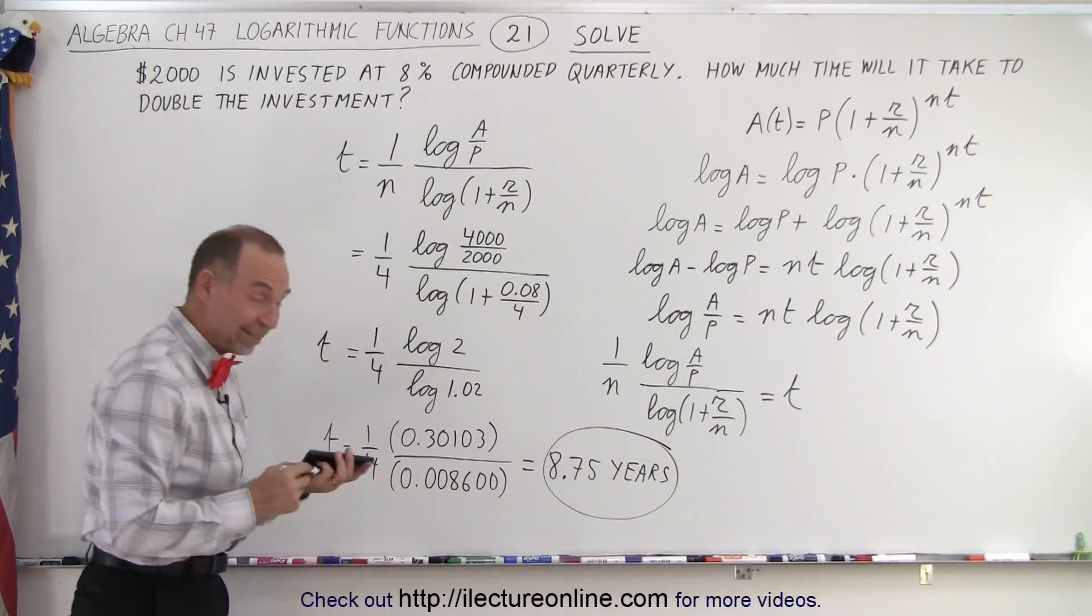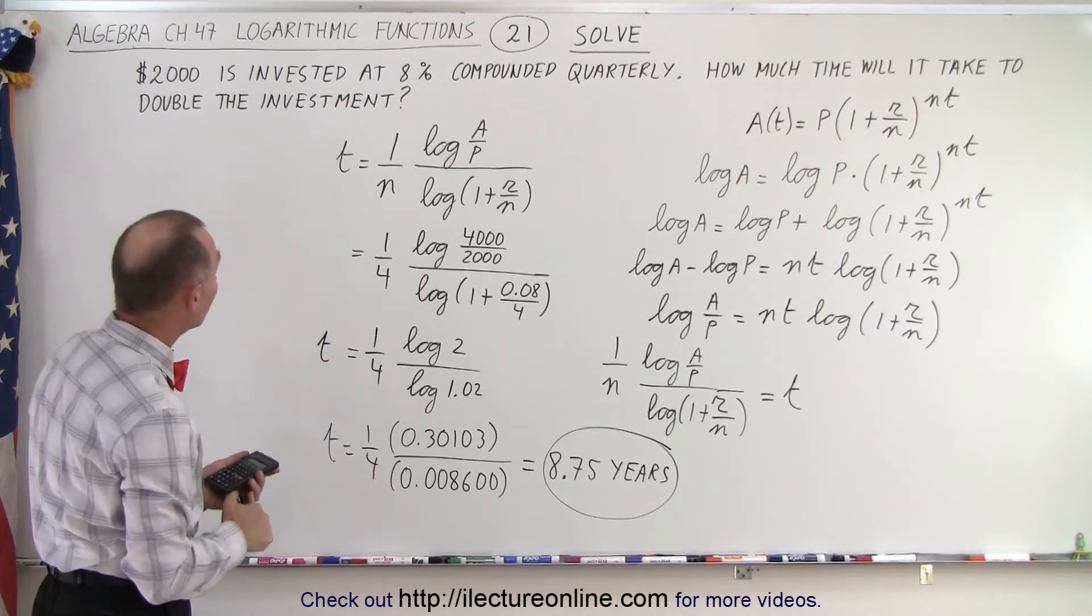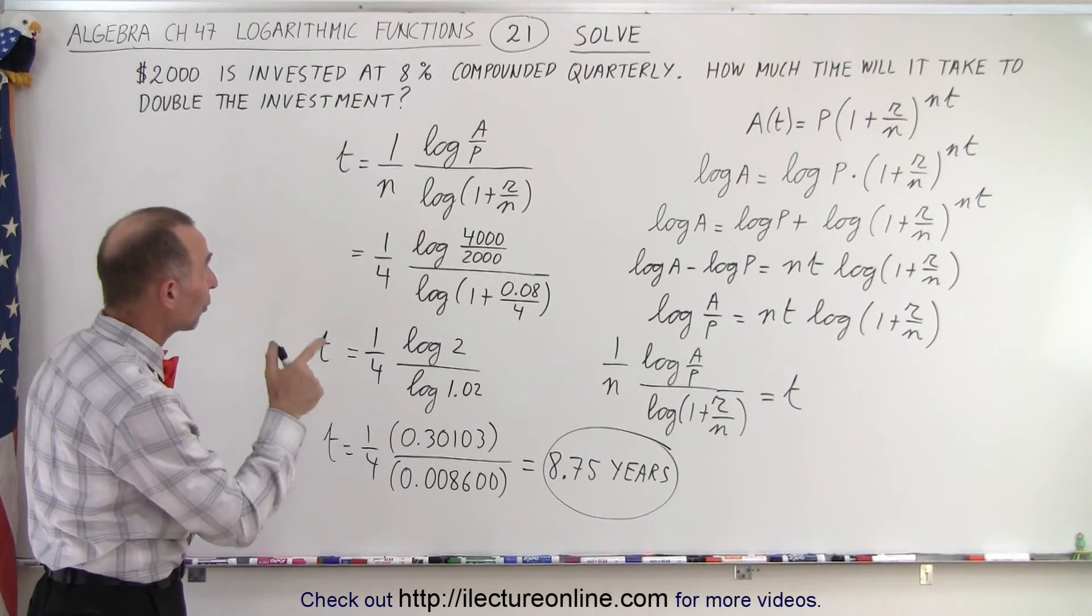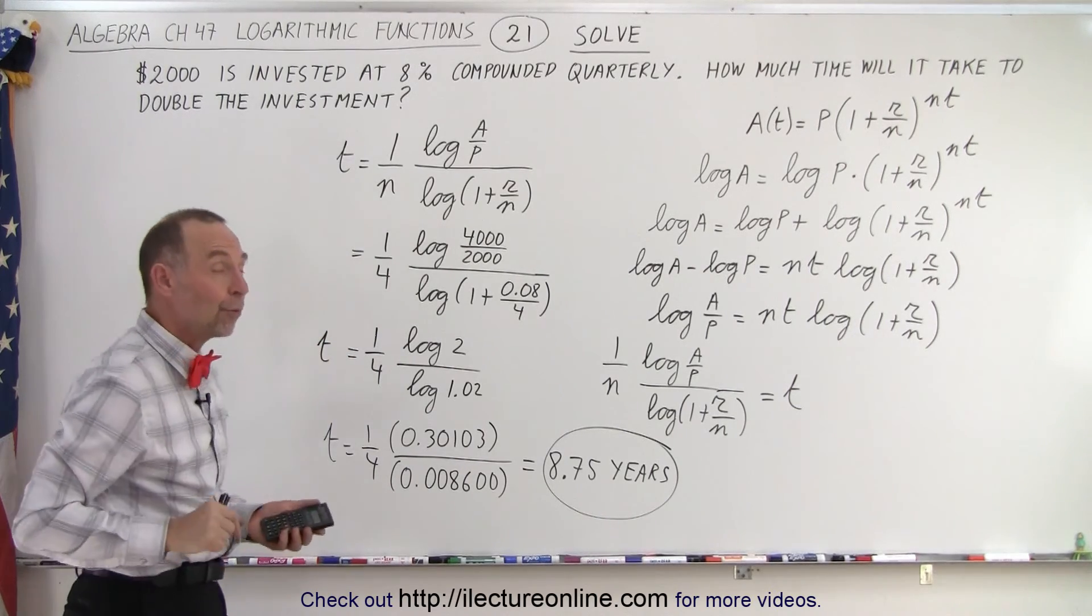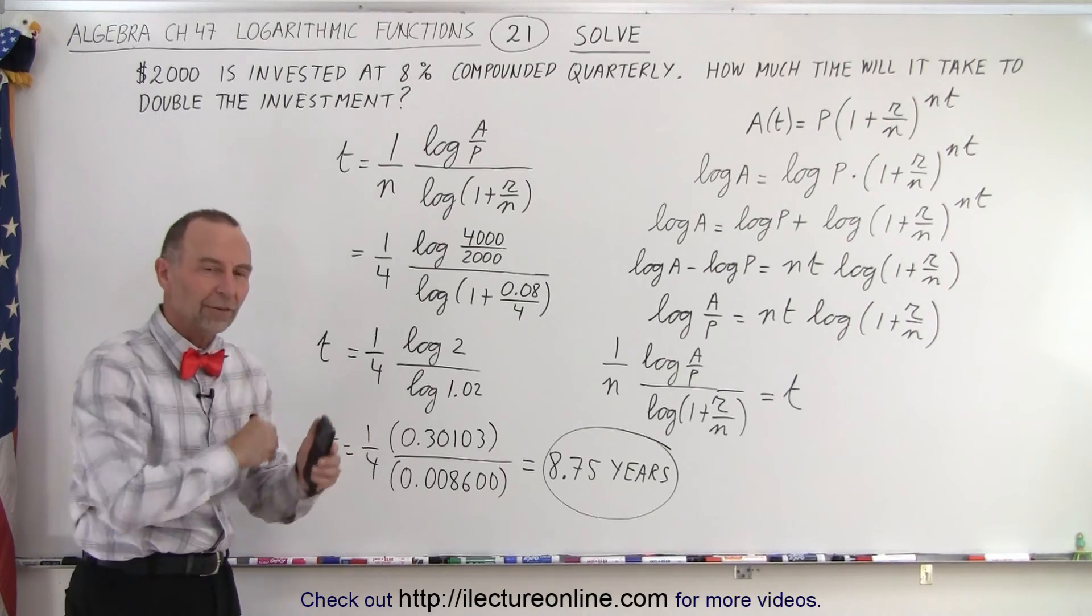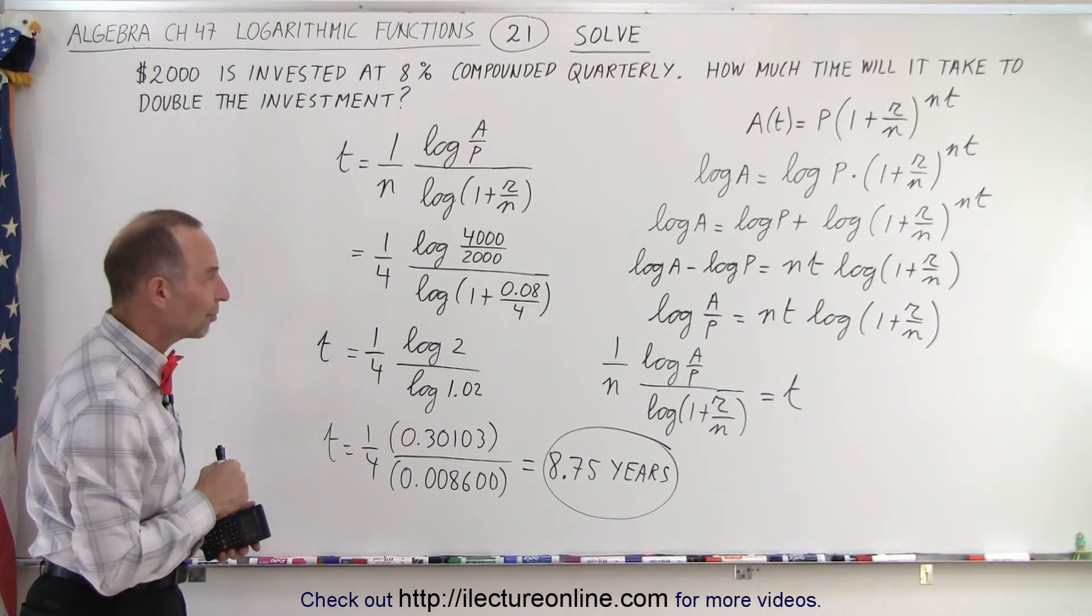So that means that if you take $2,000 and invest it at 8% compounded quarterly, in 8.75 years that will have grown to $4,000, and that is how we solve that.